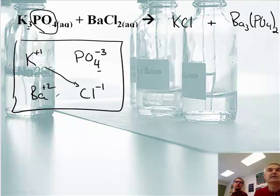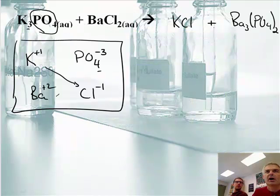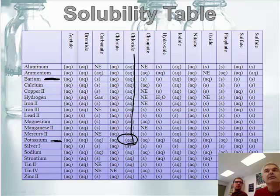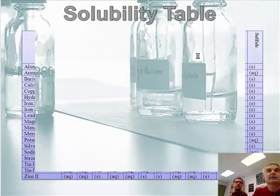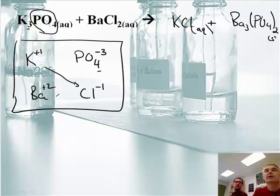Now we have to figure out the states of matter. We're looking at potassium chloride. Potassium, here's potassium. Chloride is here. So it looks like it's aqueous. And the barium phosphate. Here's barium. And phosphate is over here somewhere. Hey, it's solid. So this one's a working one. This one works. Barium phosphate is a solid.